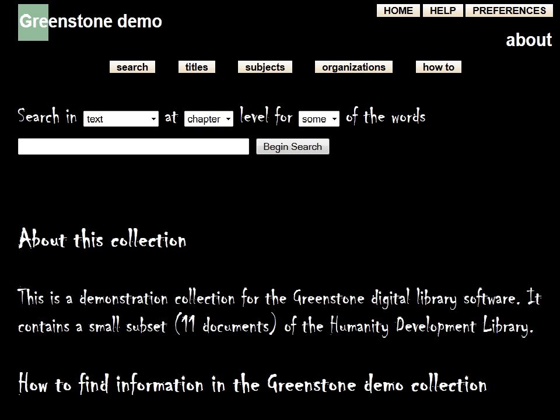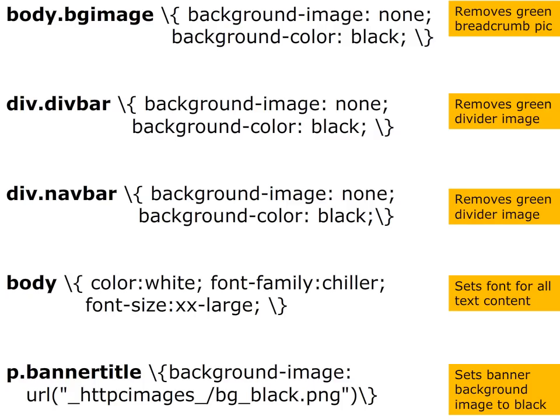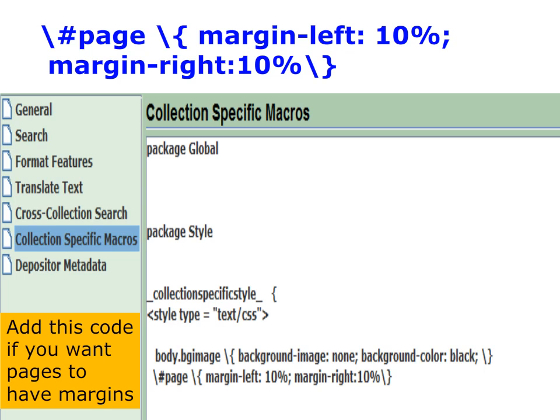Our next step is to change some things about the menu — we don't like the way it's handled. The style package code mainly removes the green elements of the Greenstone interface, removes the sidebar visual noise, and changes everything to white text on a black background. Removing the green sidebar gives us more black space, which should be fine. But if we needed a bit more margin — if we want the page centered and not too wide — we could add a left and right margin.